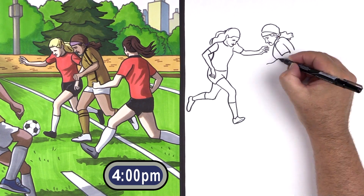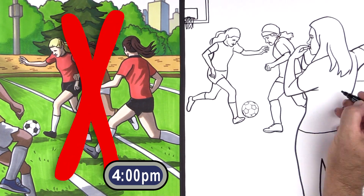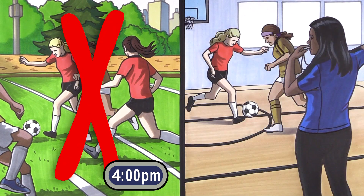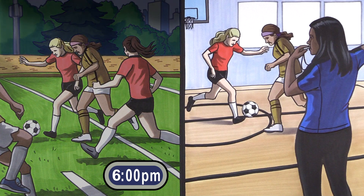For example, school officials may choose to have indoor instead of outdoor exercise activities on days with higher air pollution, or have evening sports practice on days when the ozone is forecast to be high in the afternoon.